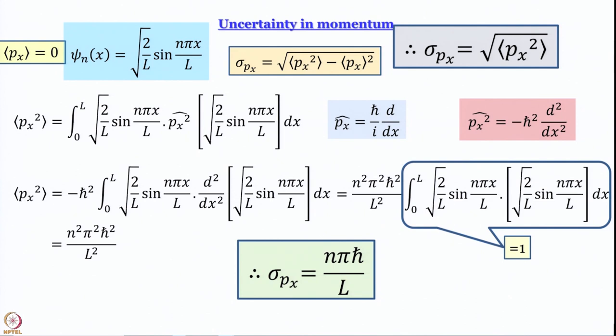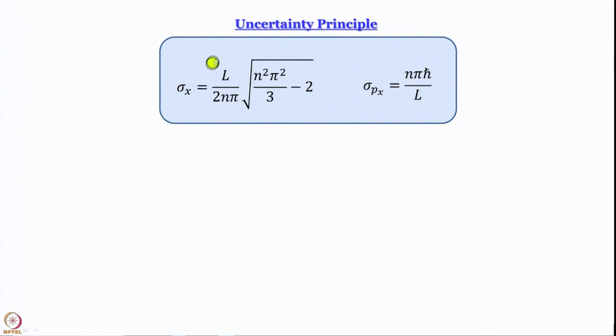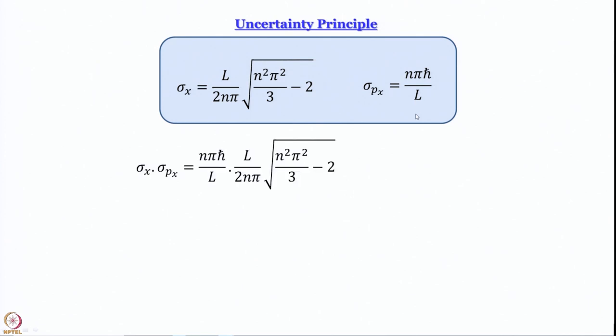We have now determined both the uncertainty in position and the uncertainty in momentum. The next task is to multiply them together and check whether the uncertainty principle is satisfied for the particle in a box. Sigma x is L/2 times the square root of (n squared pi squared)/3 minus 2, and sigma_px is nπħ/L. Multiplying them: L and L cancel, nπ and nπ cancel, leaving ħ/2 outside the square root, with n squared pi squared over 3 minus 2 inside the square root.